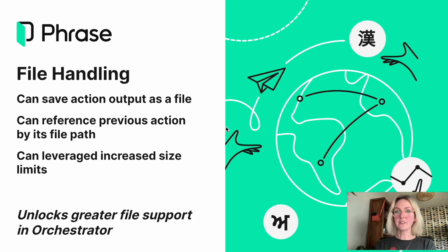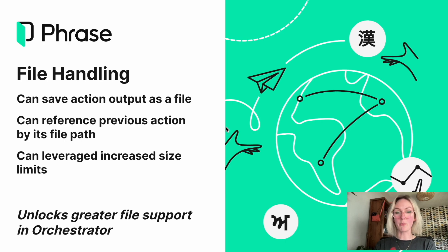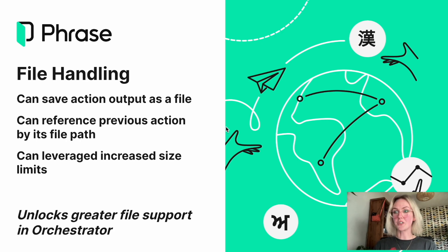But now with file handling, we have certain new benefits that we're very excited about. You can now save each action's output as a file, which means for any subsequent actions you can reference that same file output by its file path. This means we can now start seeing extended actions in your Orchestrator workflow, as well as having the ability to pass larger content because we're no longer constrained by file size.